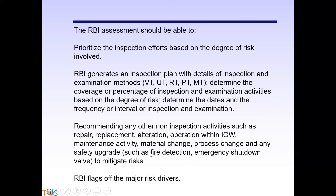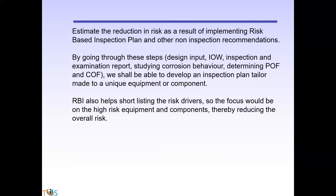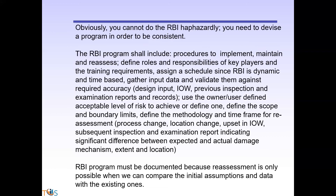There are also non-inspection activities to recommend, like fire detection and emergency shutdown, to mitigate the risk in case a failure occurs — you should have a Plan B to decrease the consequence of failure. Overall, you bring down the risk and estimate the reduction of risk based on the inspection plan and recommendations, checking whether the risk is within acceptable limits. This must be documented, because reassessment is only possible when you can compare the initial assumptions and data with the current ones — you need a baseline.